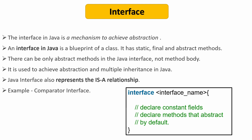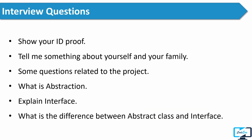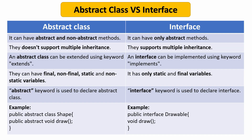Then the interviewer asked him what is the difference between abstract class and interface. Here are some differences you can use: an abstract class can have abstract and non-abstract methods, while an interface can have only abstract methods. An abstract class doesn't support multiple inheritance, while with the help of an interface we can achieve multiple inheritance. You can mention three or four such points in your answer.